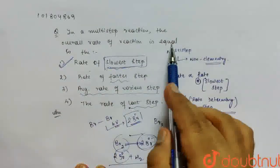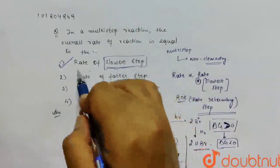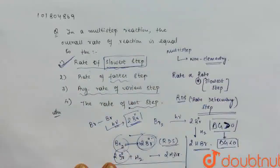So the correct answer will be Rate of the slowest step, Option number 1. Thank you.